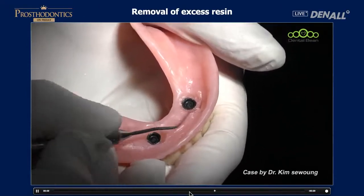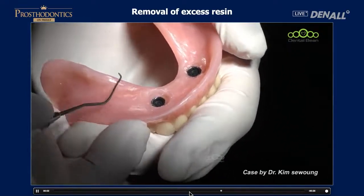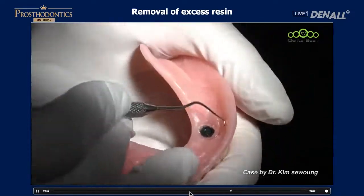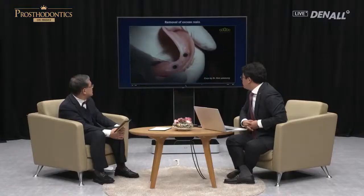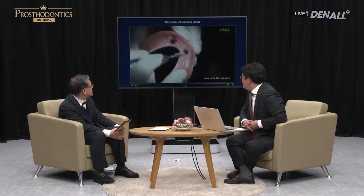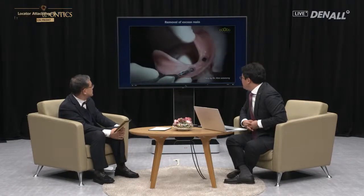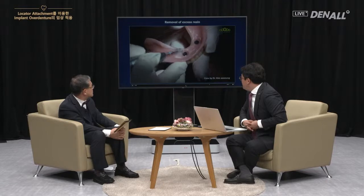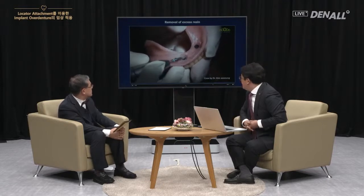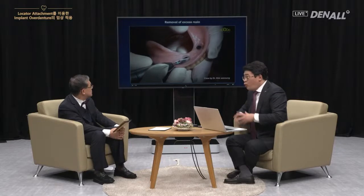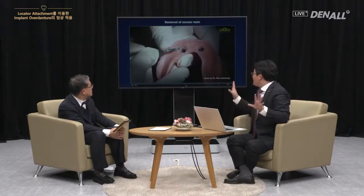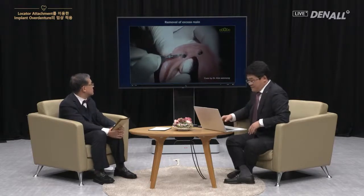If we use a denture bur for removing excessive resin, at times the denture-based resin can be affected as well, so using Vaseline is a very good way. If we are not careful, the denture bur can remove denture-based resin as well. What is most important is that you should not apply Vaseline inside of the hole — just outside.